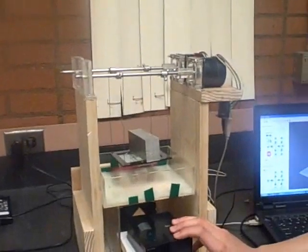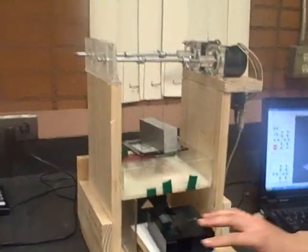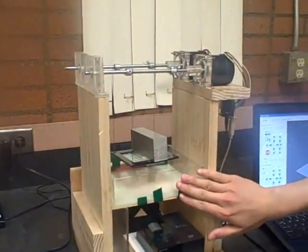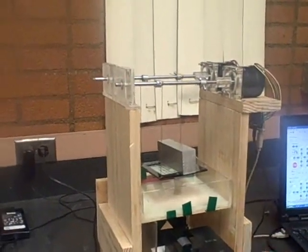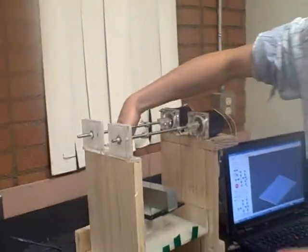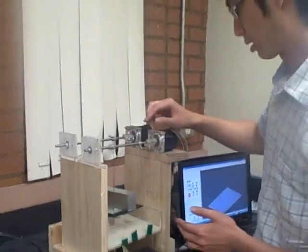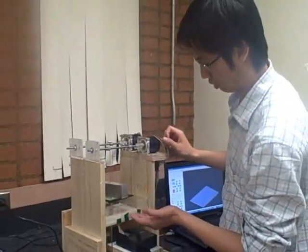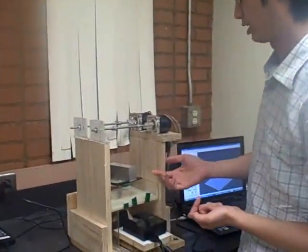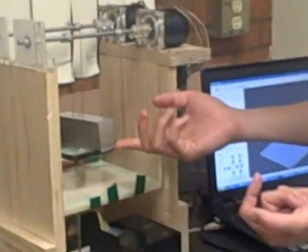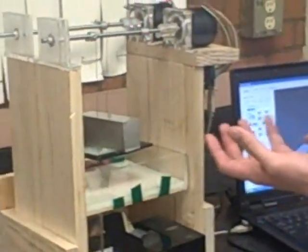And the projector will project the image to the resin from the bottom. And then we have a platform here. And the resin will be solidified in the bottom of the platform.